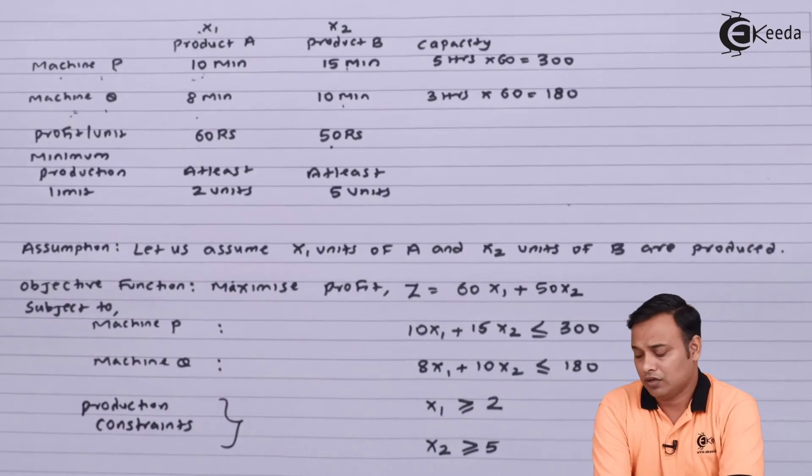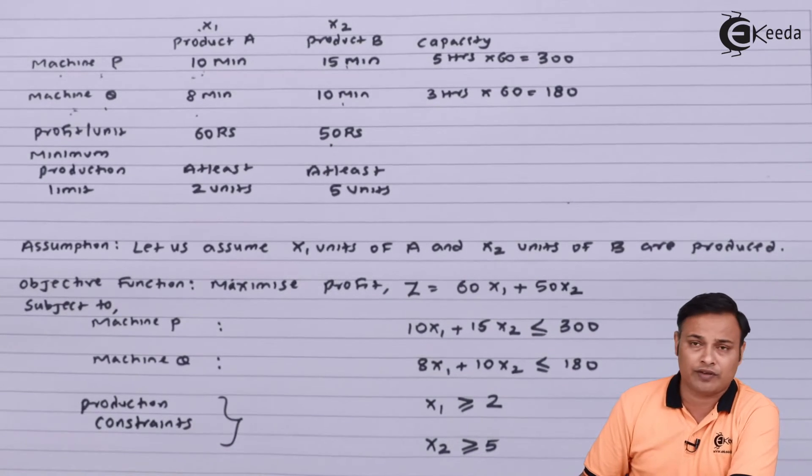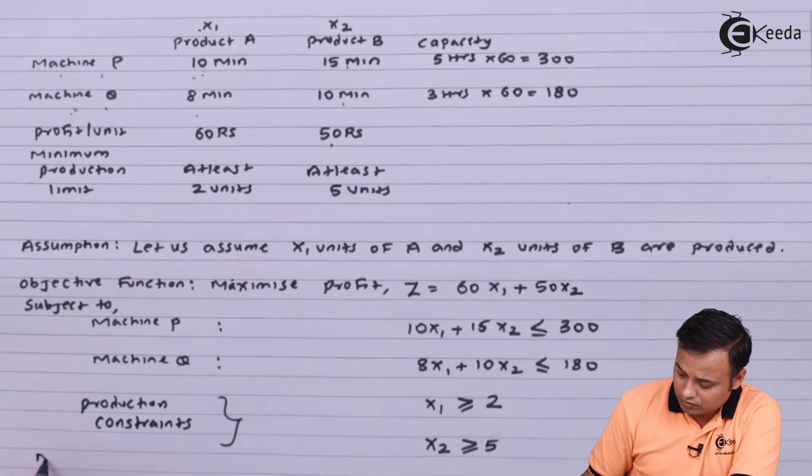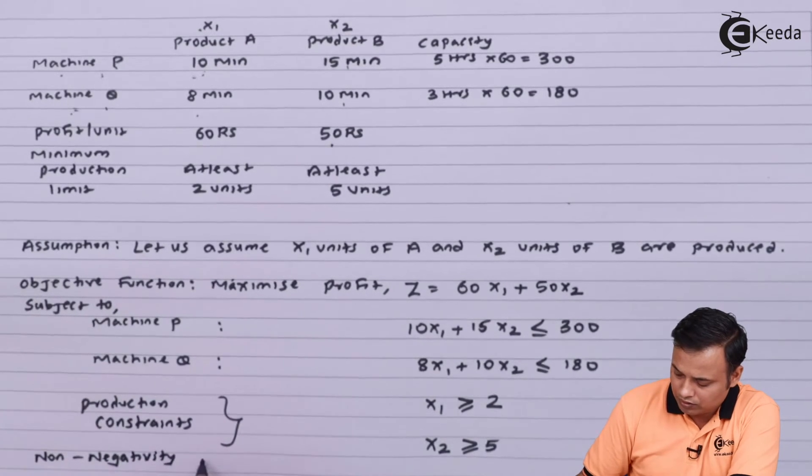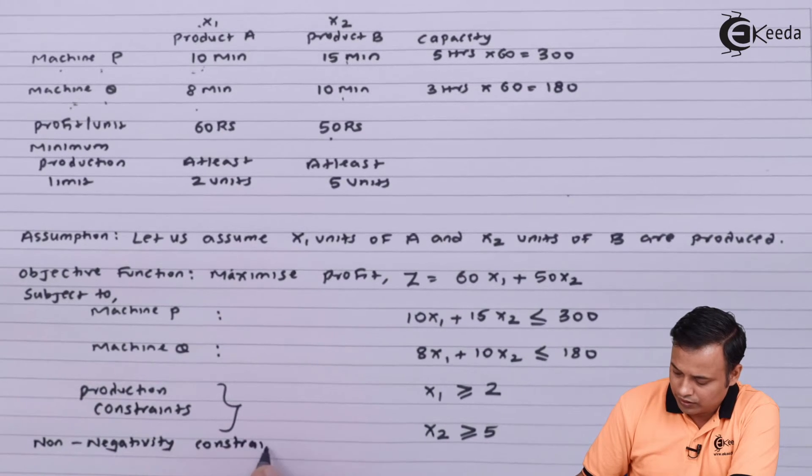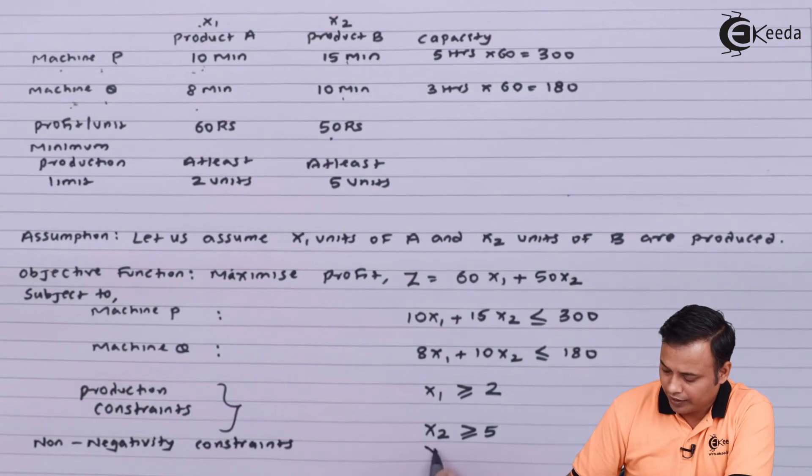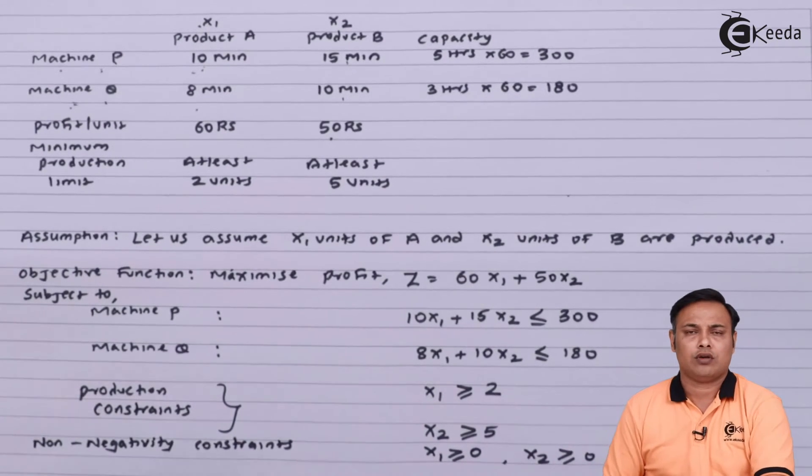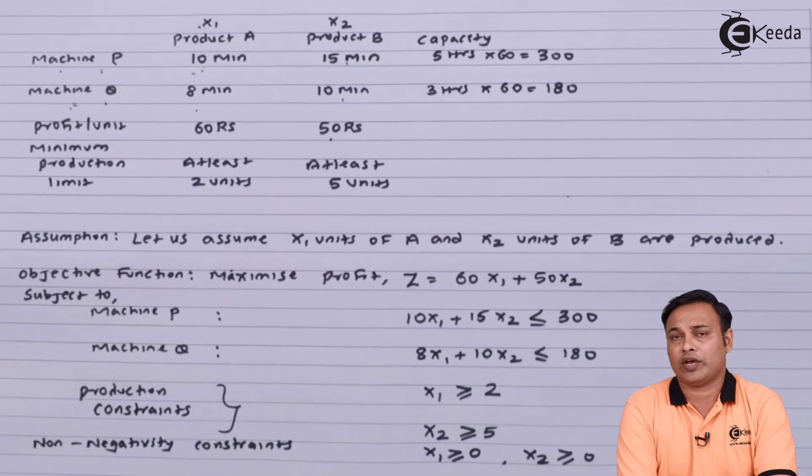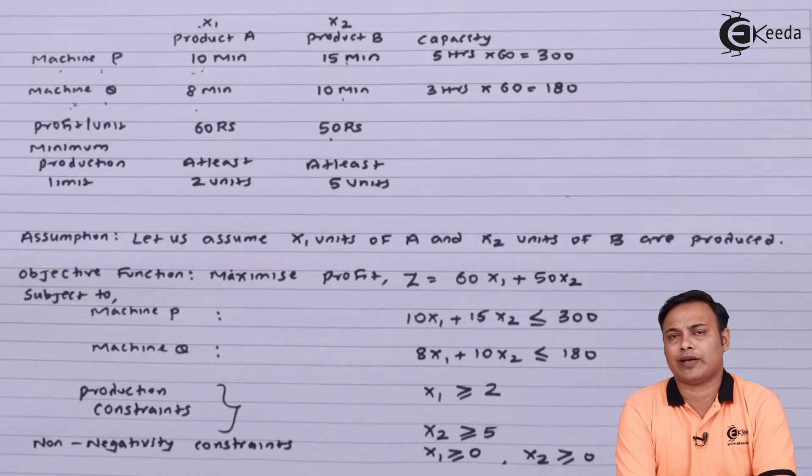And last but not the least, to make the problem realistic, we always have the non-negativity constraints which will be x1 more than equals to 0, x2 more than equals to 0. So we have converted the whole table into a linear programming problem or a mathematical problem.